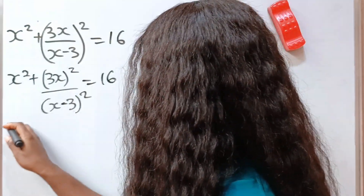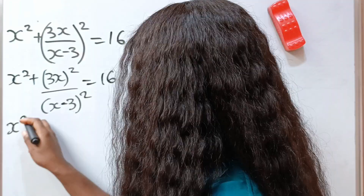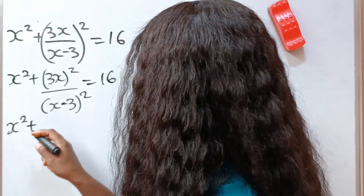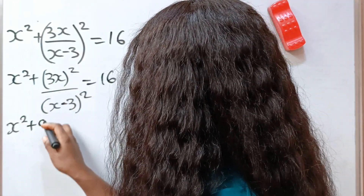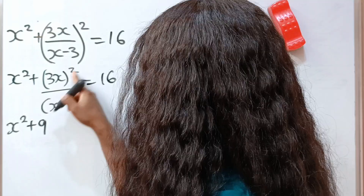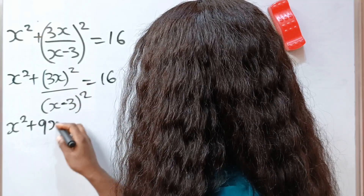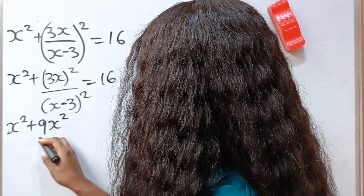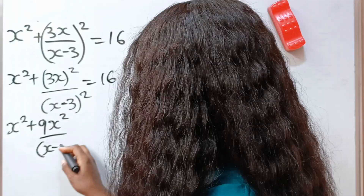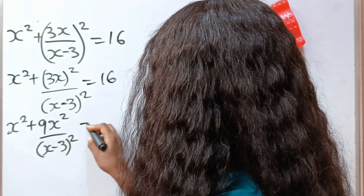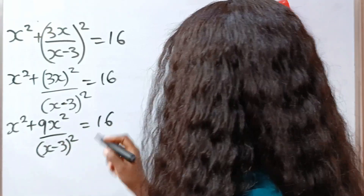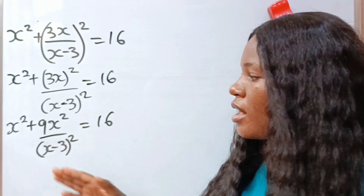So we have x to the power of 2 plus 3 squared, which gives us 9, times x squared, divided by x minus 3 squared, is equal to 16.